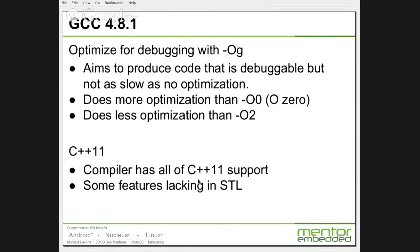So you turn optimization off completely when debugging, but then your program isn't running as fast as it could. -Og tends to do more optimization than -O0 but less than -O2, so your code runs reasonably fast. Obviously if you want it to run as fast as possible you'd turn the optimization knob up to -O2 or -O3, but then you create the debugging problem. This is a nice balance between the two choices of where you set the optimization level.